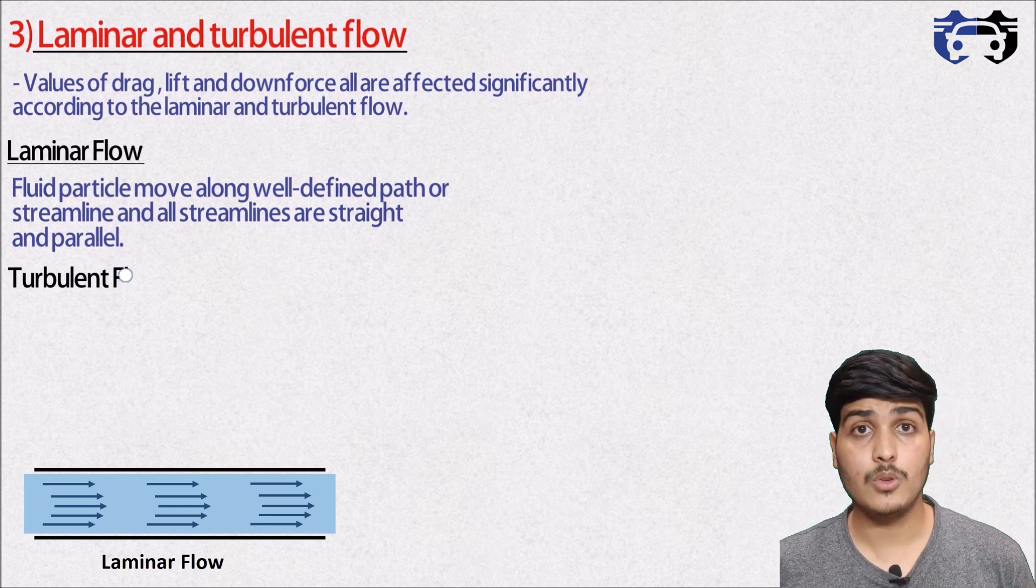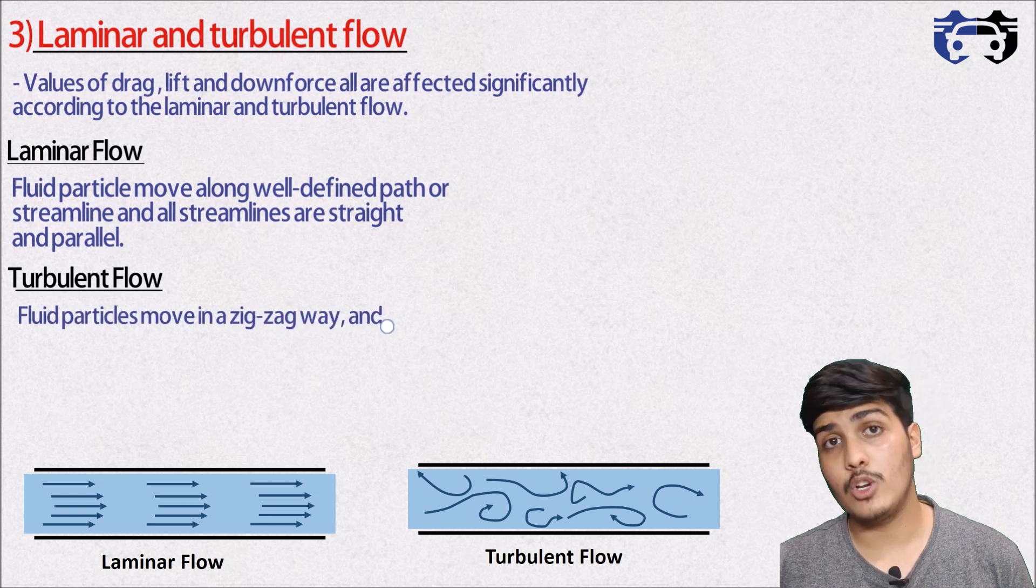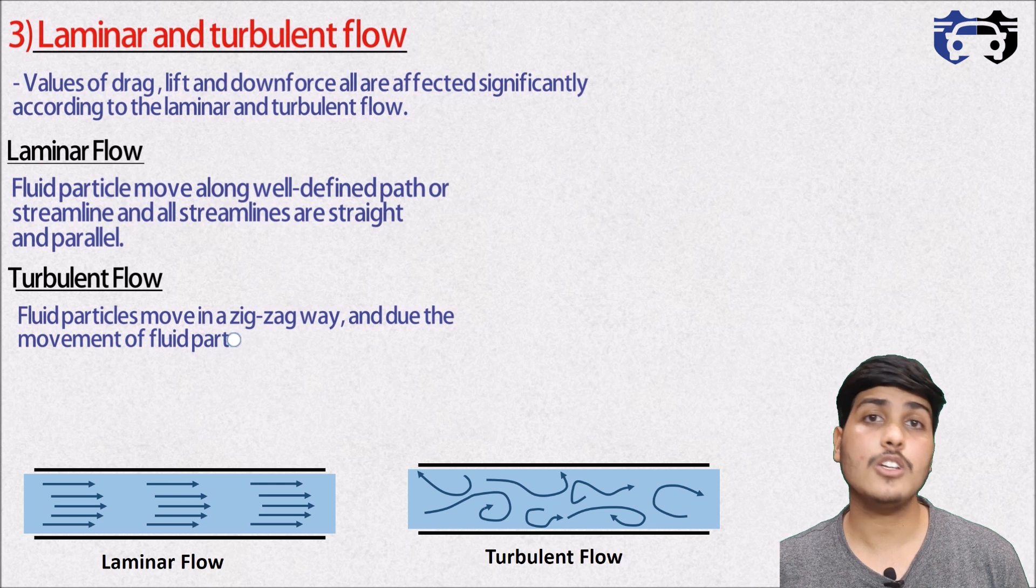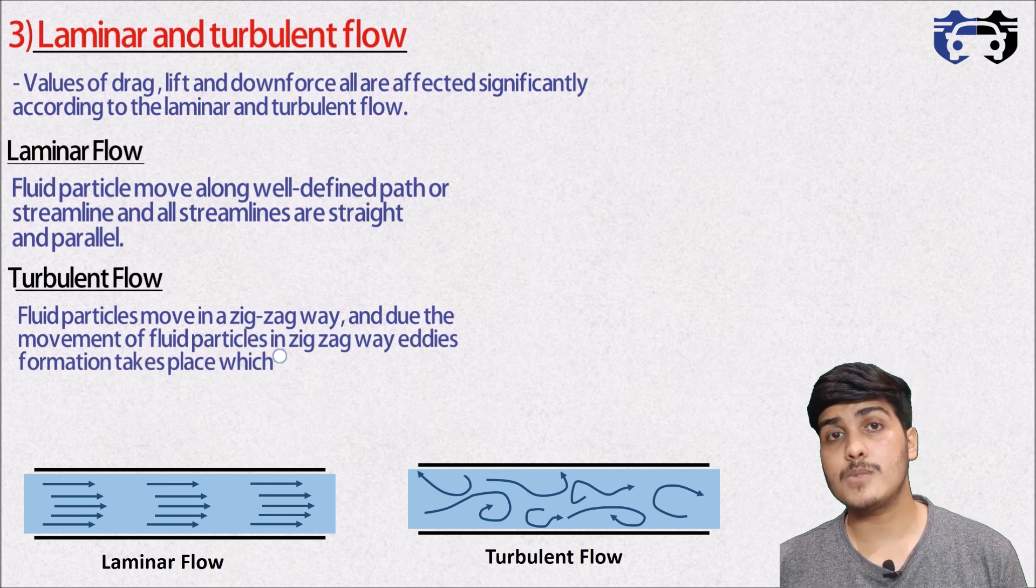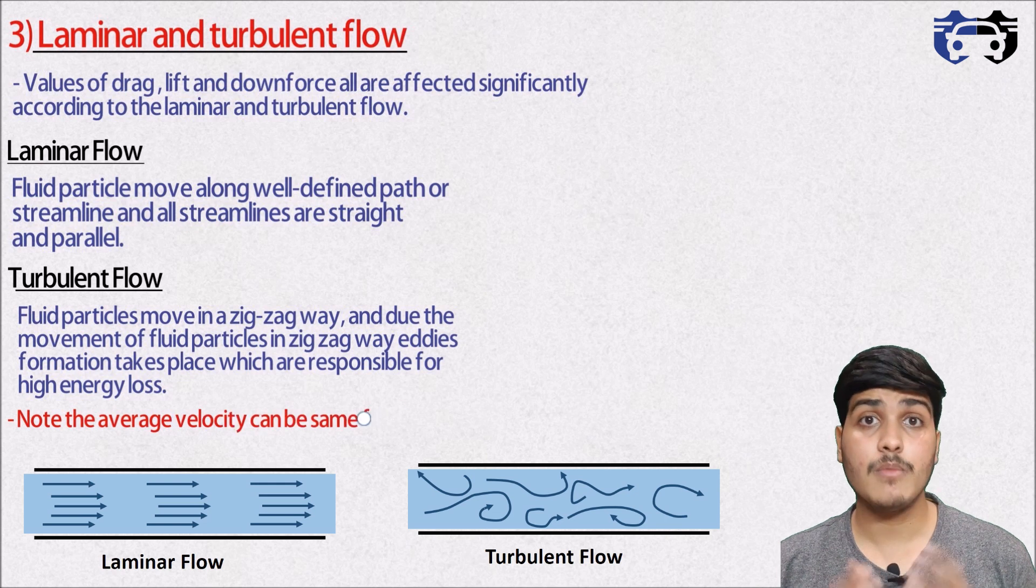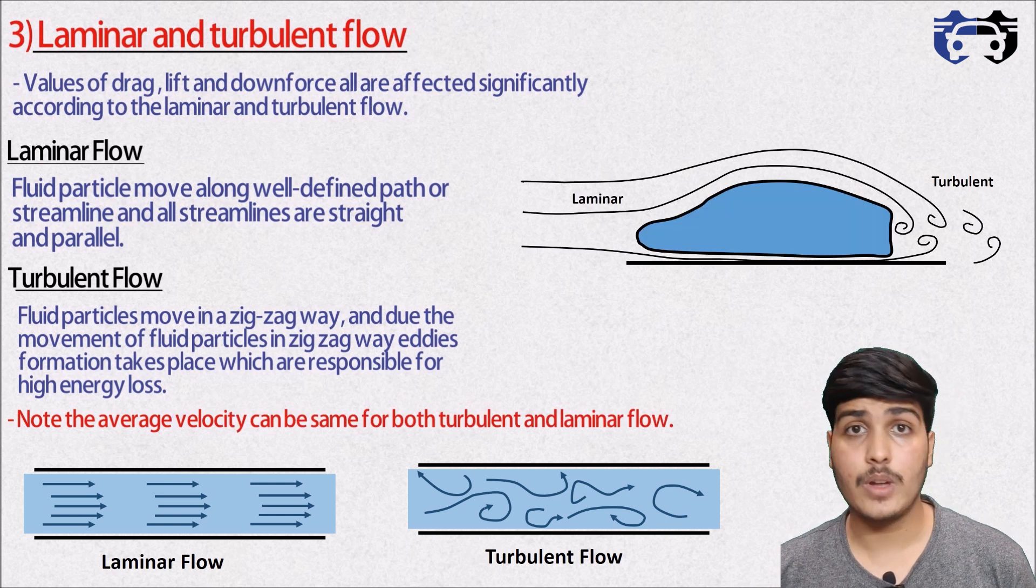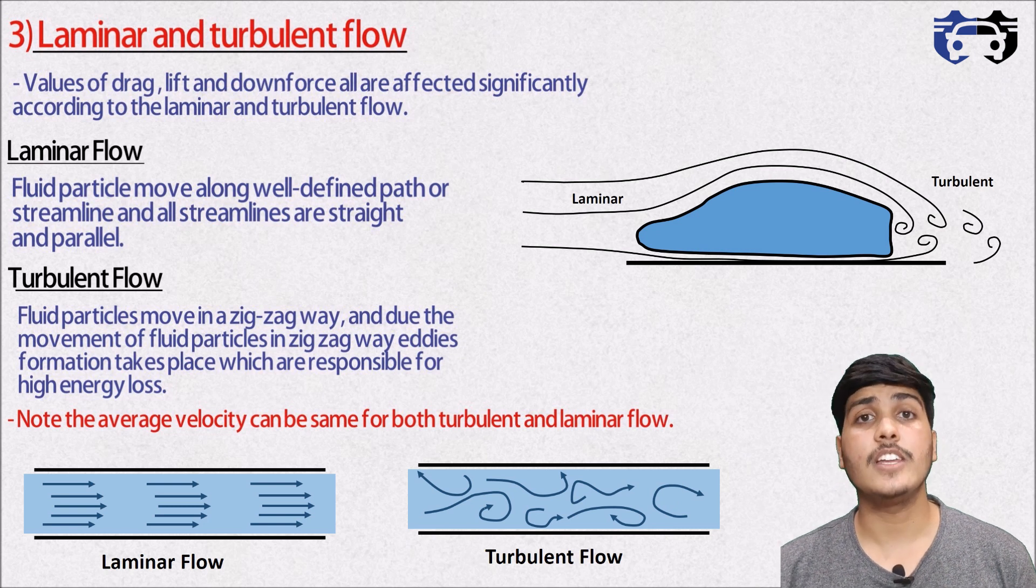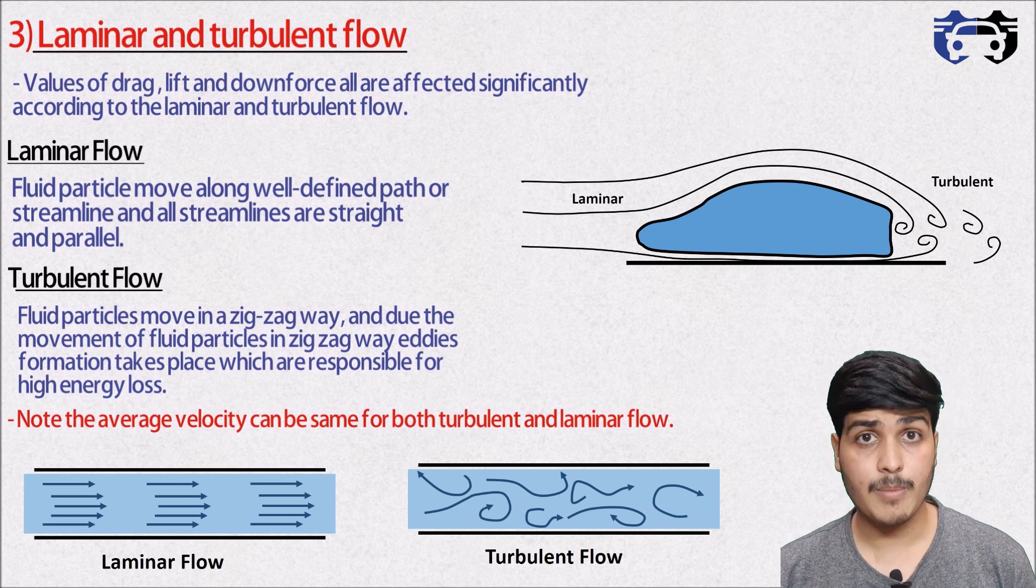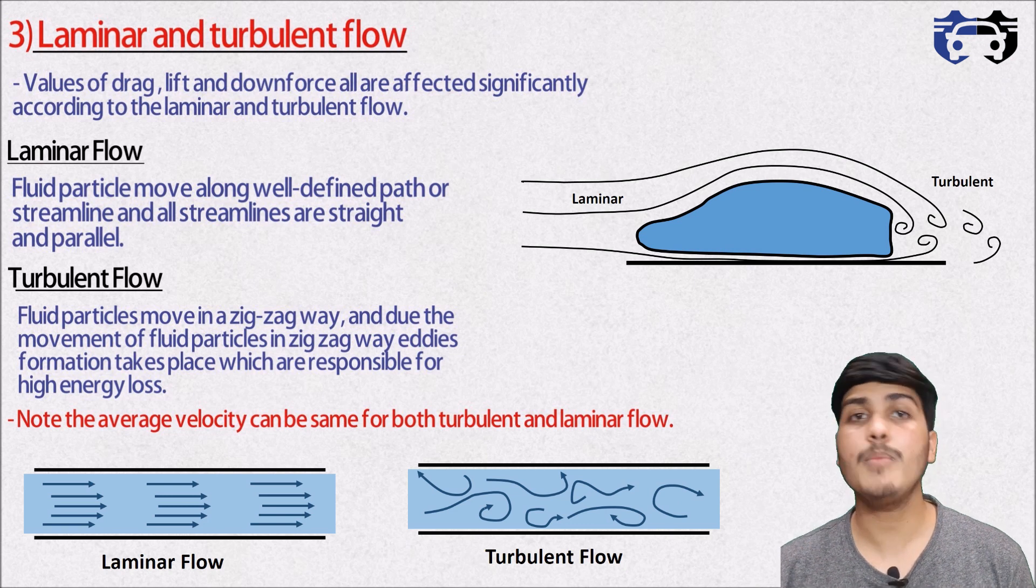Now other is the turbulent flow in which the fluid particles move in a zigzag way and due to the movement of fluid particles in zigzag way, the formation of eddies takes place which are responsible for the high energy loss. Note the average velocity can be same for both laminar and turbulent flow. Also when the vehicles travel to an undisturbed environment, then initially the flow can be considered as laminar but it can convert into turbulent flow due to the disturbance created by the vehicle itself.